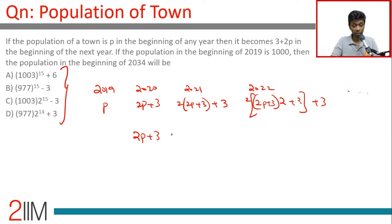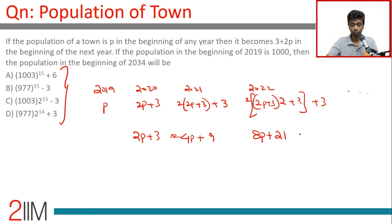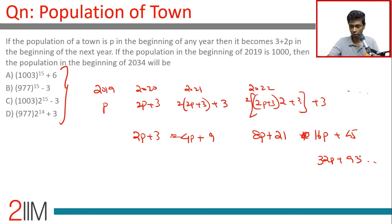Expanding these: 2p + 3, then 4p + 9, then 8p + 18 + 3 = 8p + 21, then 16p + 45, then 32p + 93, and so on.